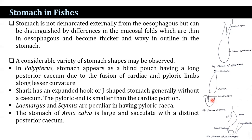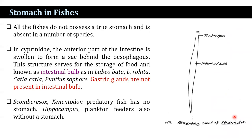Chimeras and Squalus are peculiar in having a pyloric cecum. The stomach of Amia calva is large and succulent with a distinct posterior cecum. Not all fishes possess a true stomach, and it is absent in a number of species. In the Cyprinidae, the anterior part of the intestine is swollen to form a sac behind the esophagus. This structure serves for food storage and is known as the intestinal valve, found in Labeo, Catla, Puntius, etc. Gastric glands are not present in the intestinal valve.